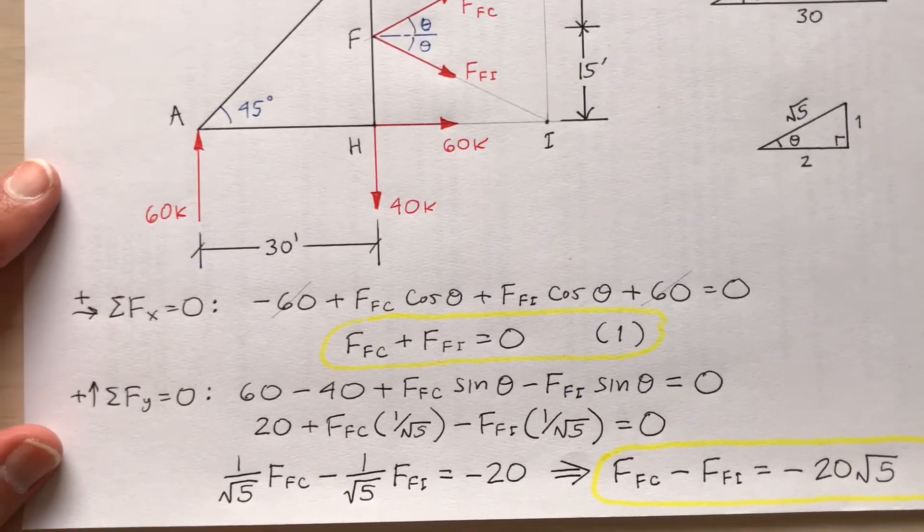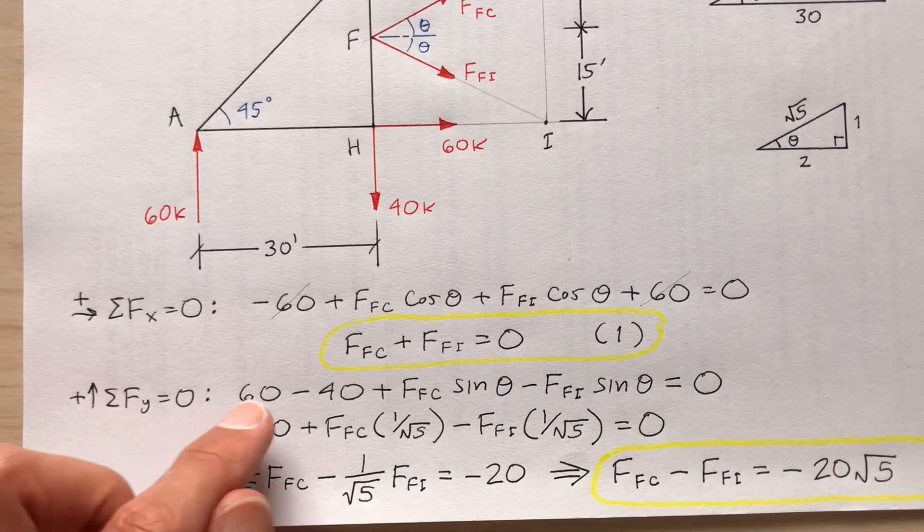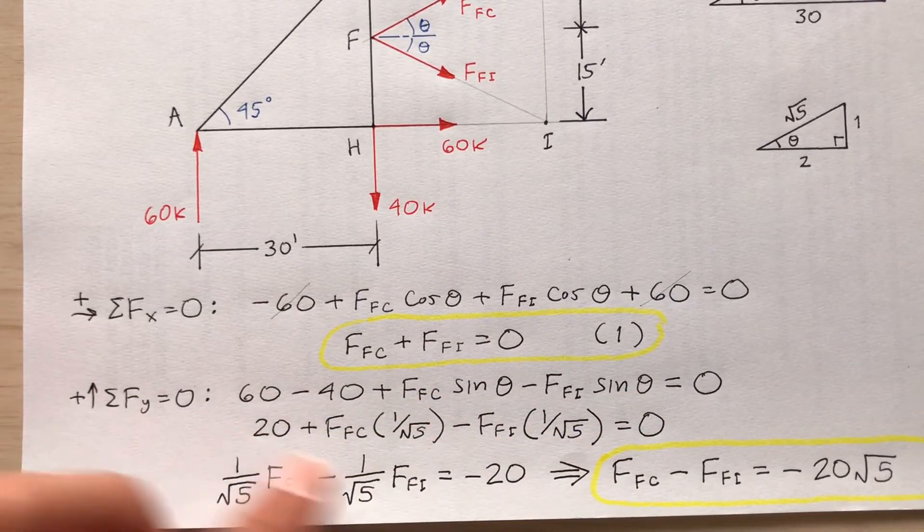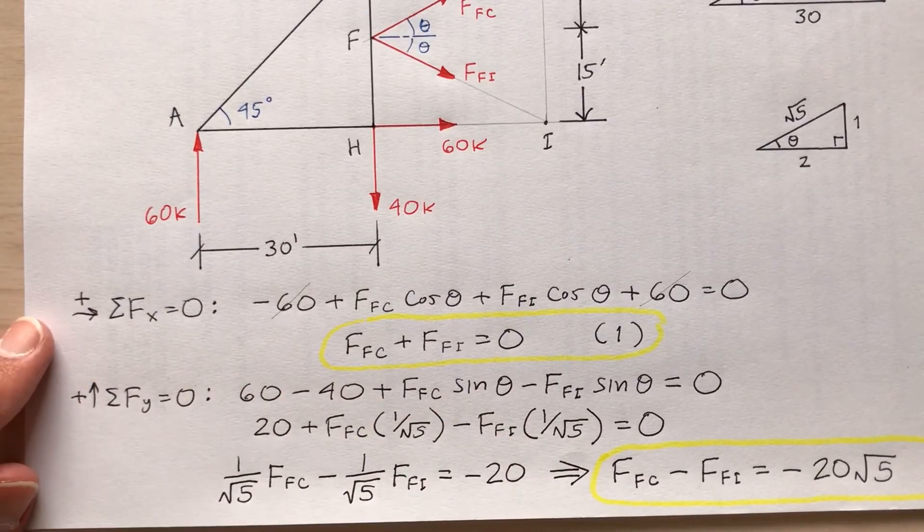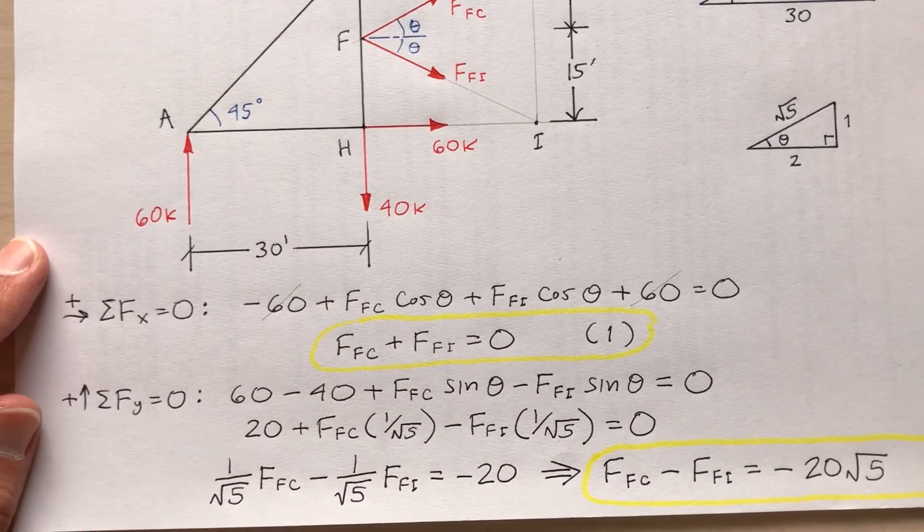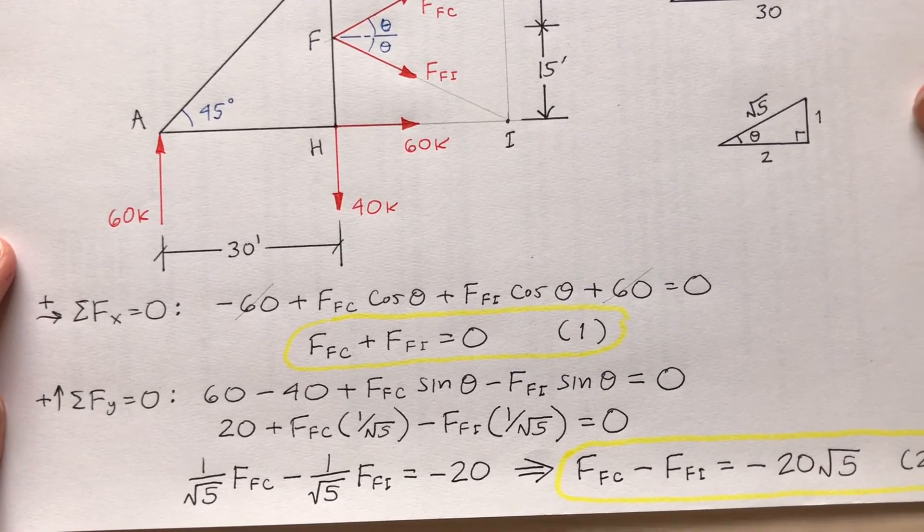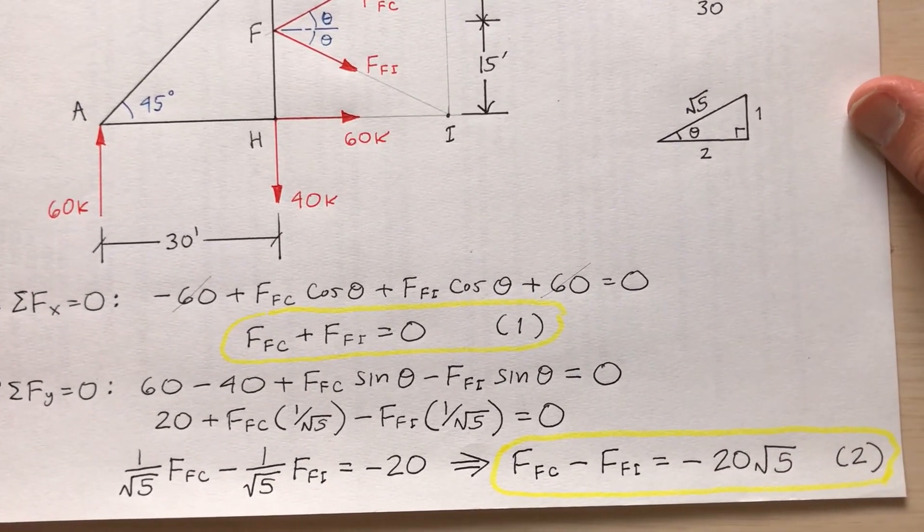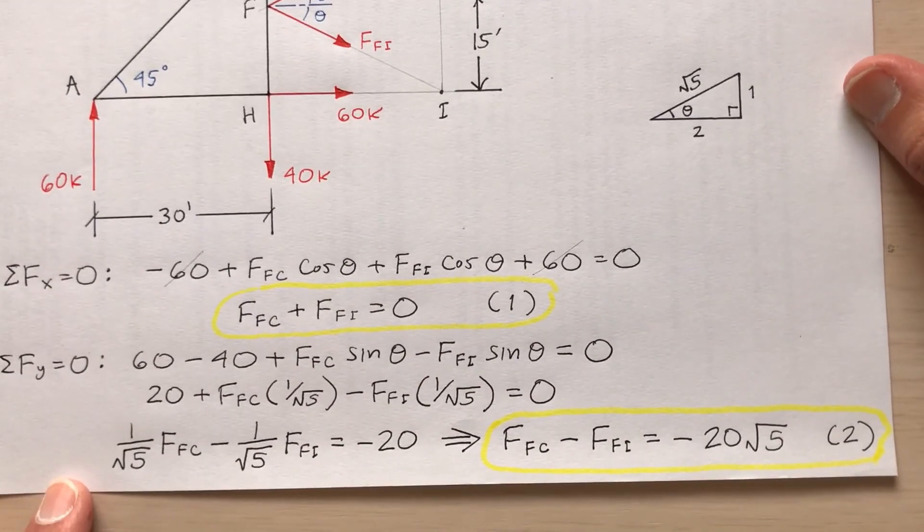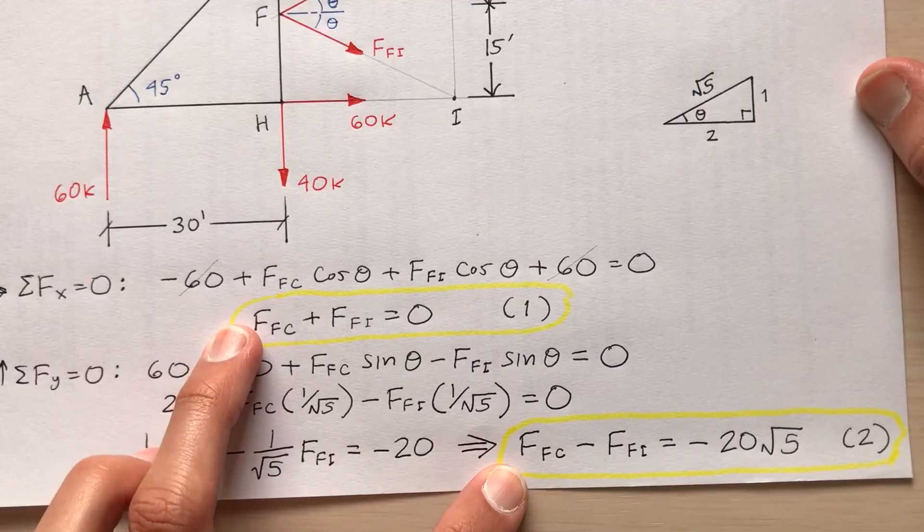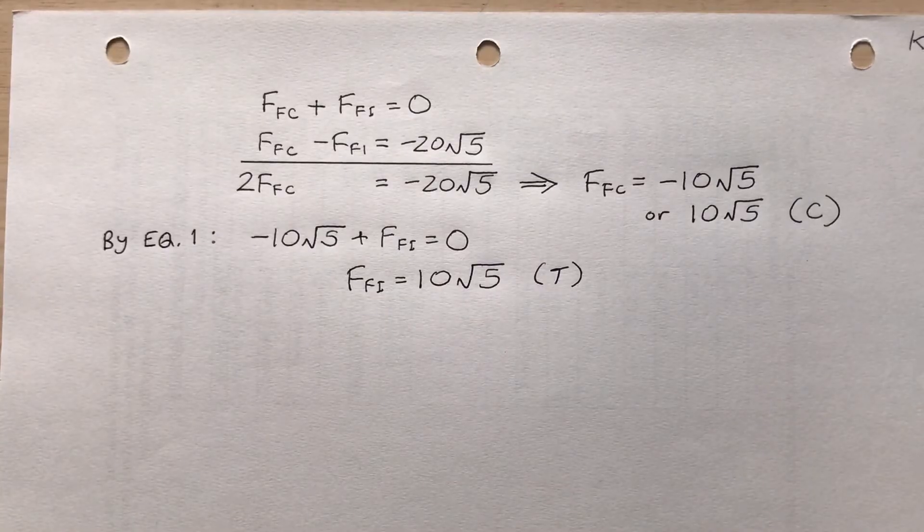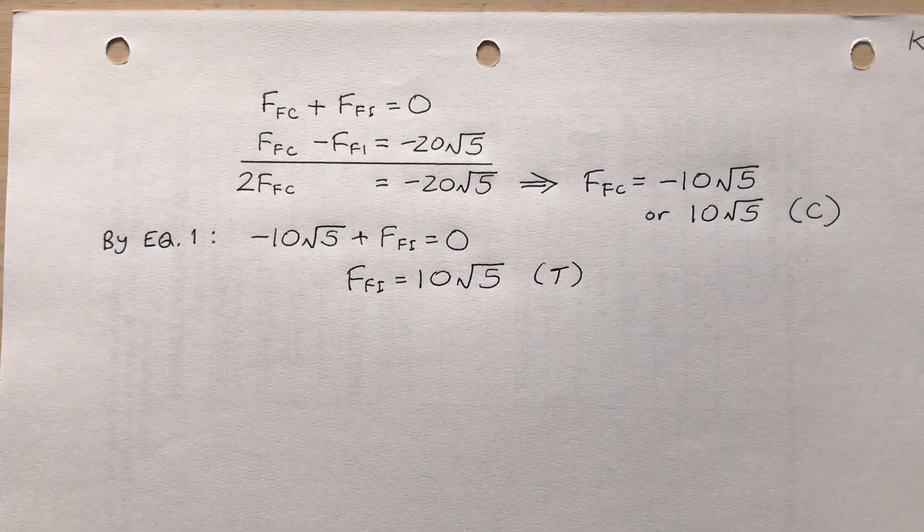And then the sum of the forces in the y direction. Sorry, I just squeeze it in at the bottom of the paper. Sum of the forces in the y direction is zero. Double check all this. I remember that theta is a special angle. So I'm able to come up with the sine of theta exactly in terms of this irrational number, one over the square root of five. Okay, pause the video if you have to. And then I come up with equation two. See that equation two. So two equations and two unknowns. I'm going to solve those simultaneously.